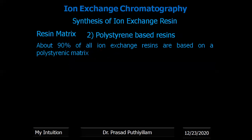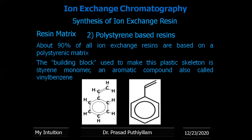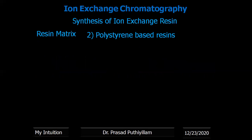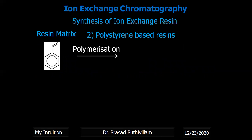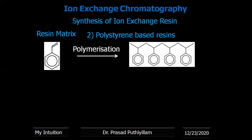As mentioned, 90% of all ion exchange resins are based on a polystyrenic matrix. The building block or monomer is styrene, also called vinyl benzene. The structure of vinyl benzene has a vinyl double bond; because of this double bond, it can open and connect to another vinyl benzene molecule, continuing the reaction to form a very large molecule through polymerization — getting a large number of repeating units, with only four represented here.